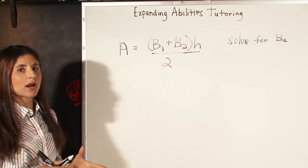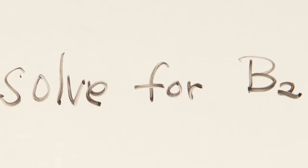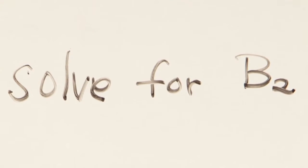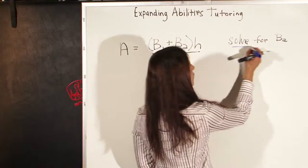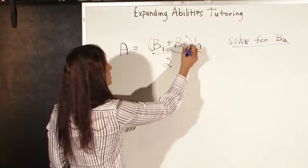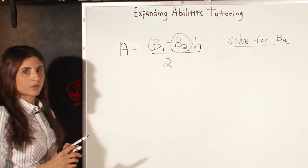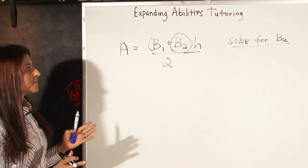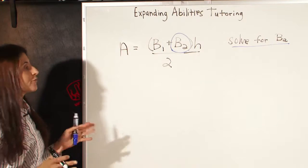Sometimes we're asked how to solve for one of the variables in the equation. In this case, we're asked to solve for B2. So we want to try to get this B2 all alone, and there are going to be some different steps to do that.